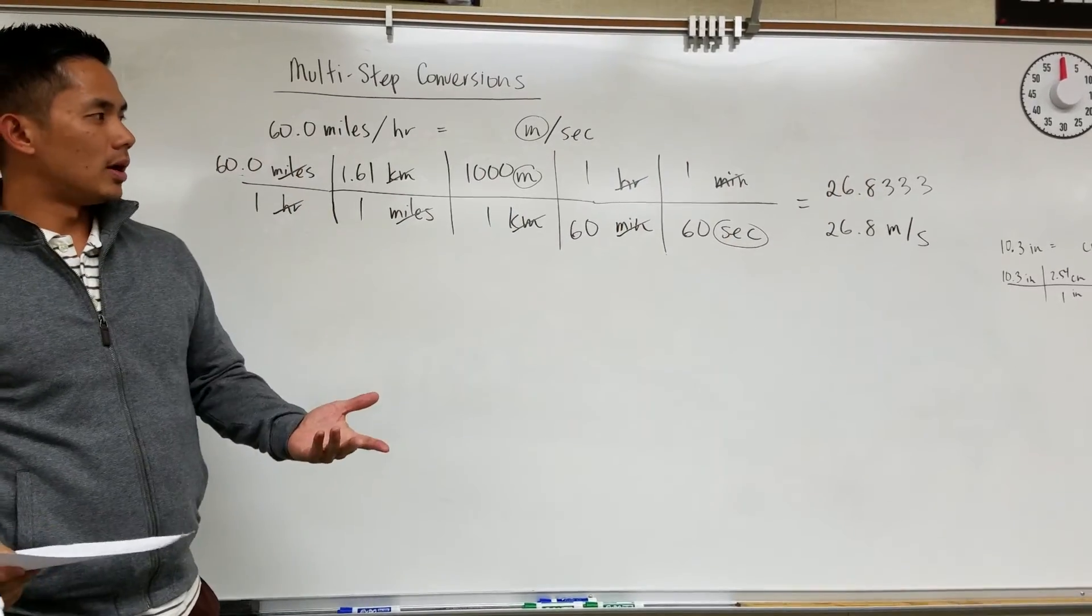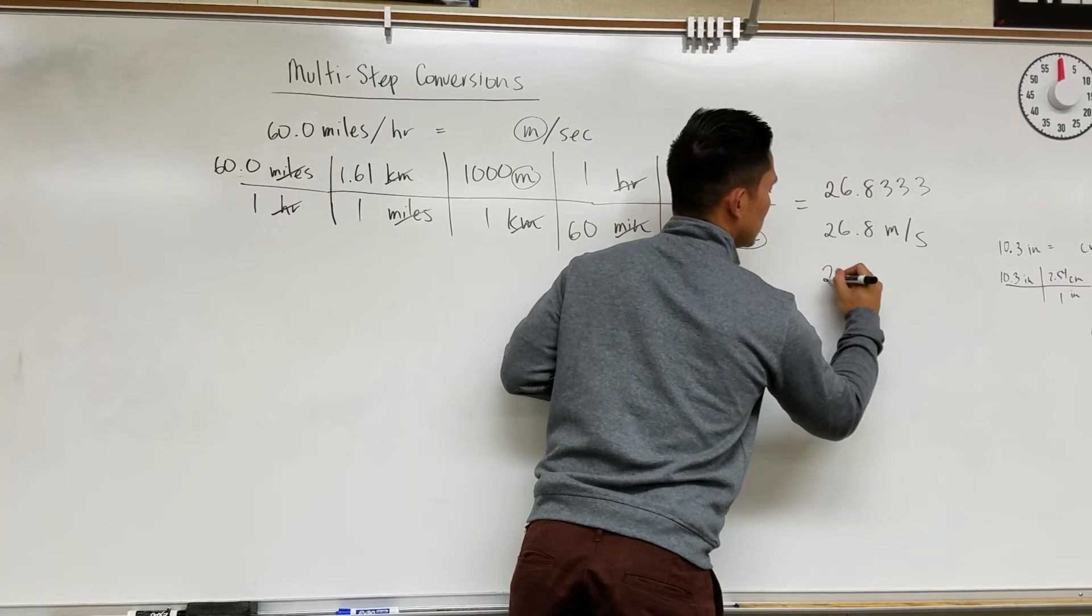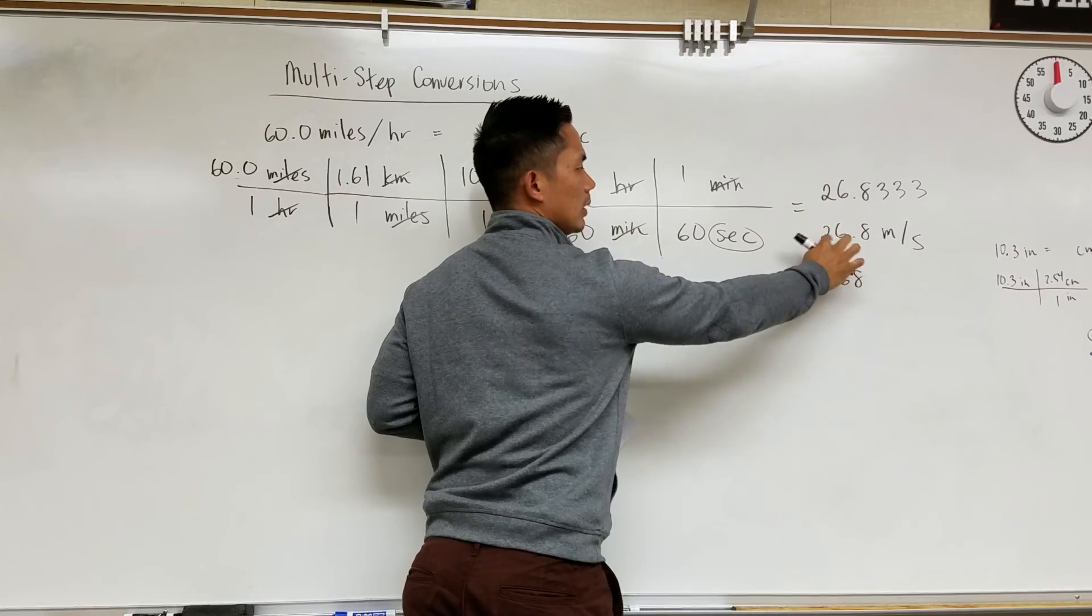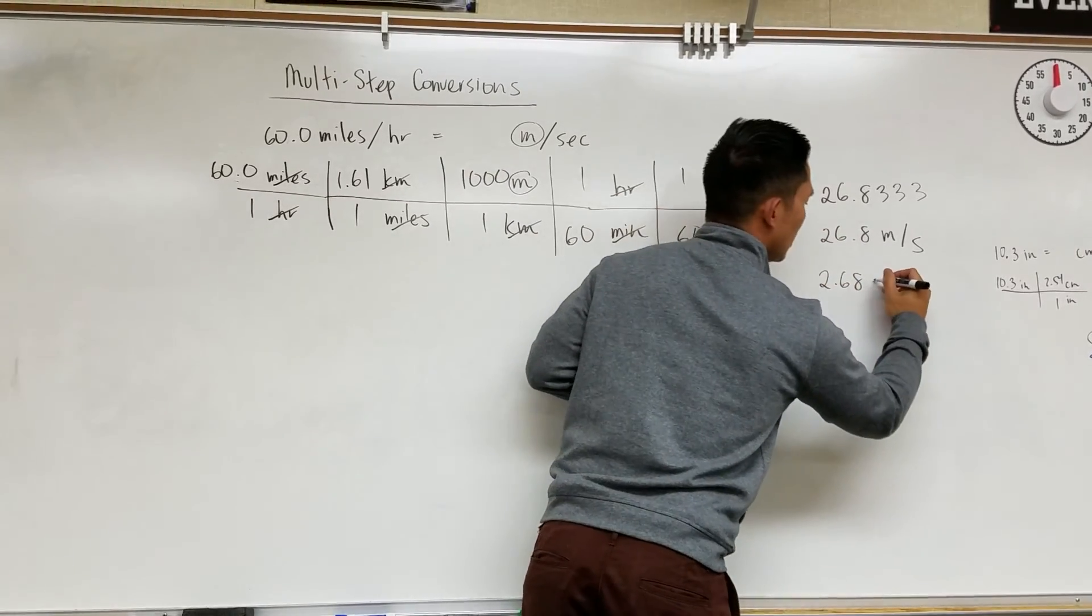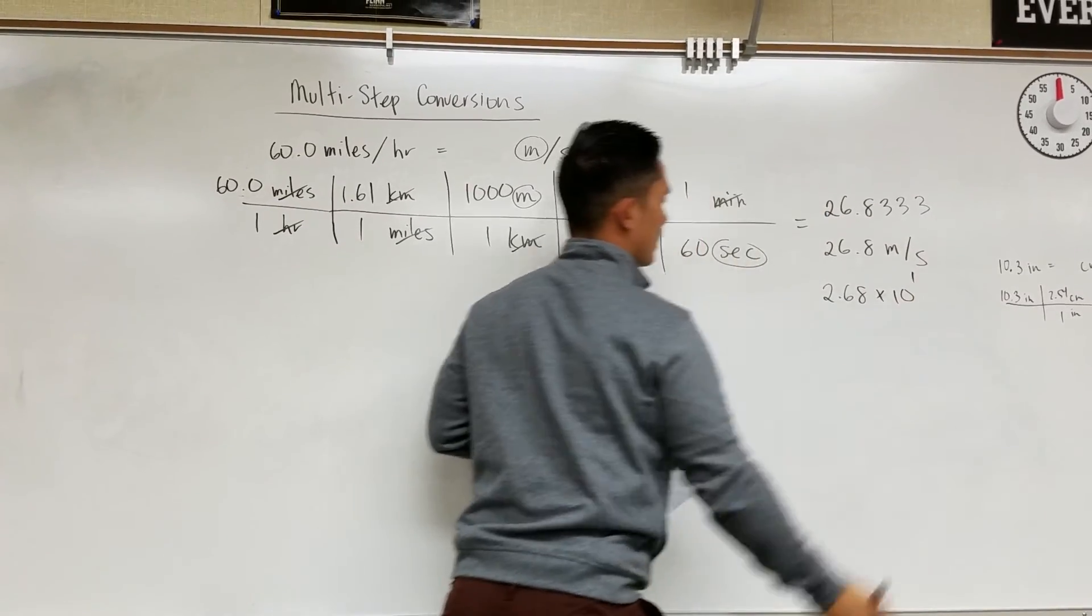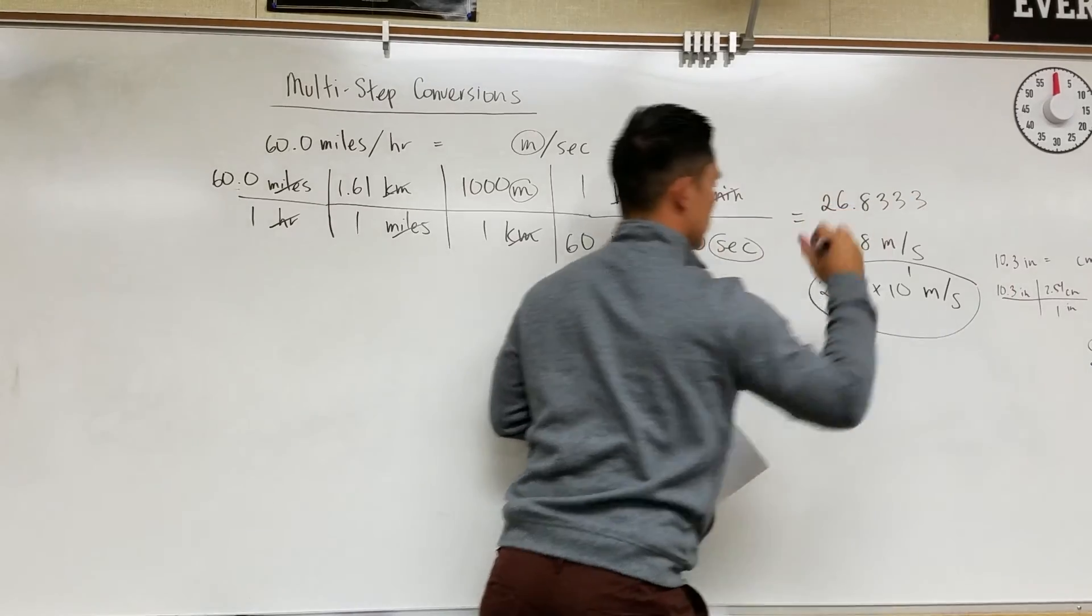This is meters per second. If your teacher wants all of the answers in sig figs notation, then this will be 2.68. Bring that decimal in between the first two numbers. So 2.68 times 10 to the first meters per second. So the answer.